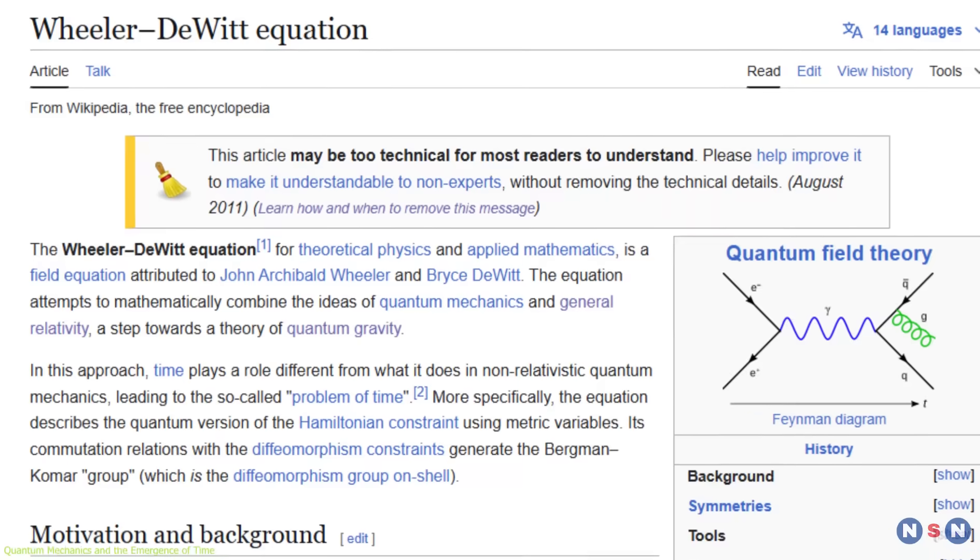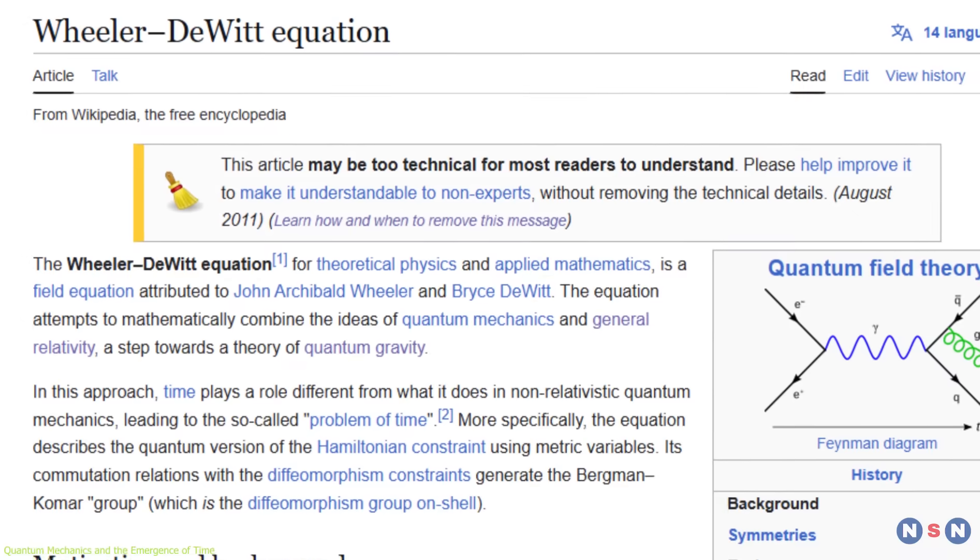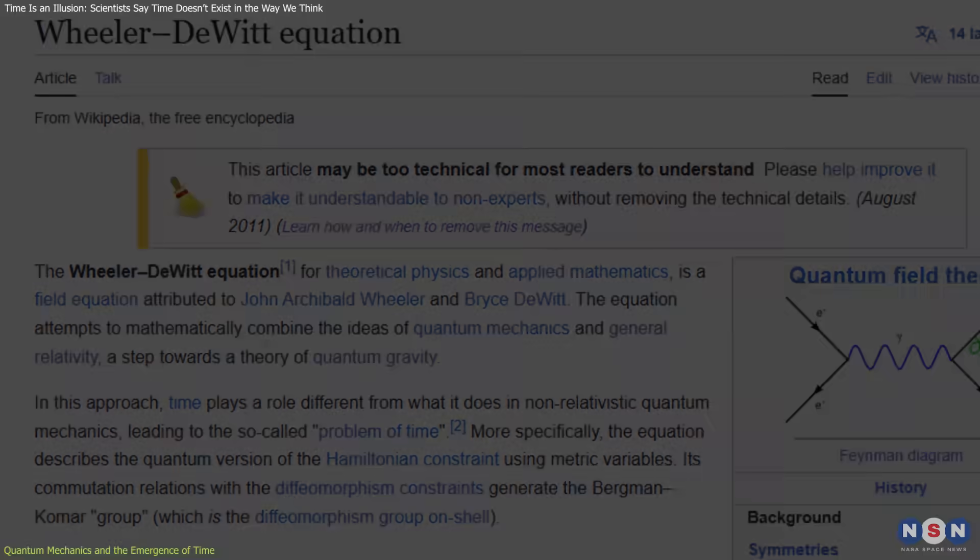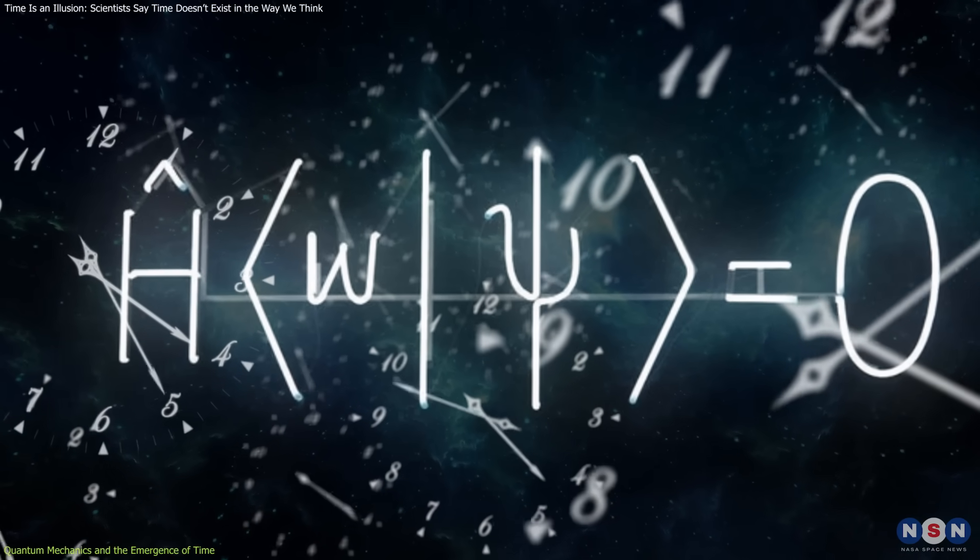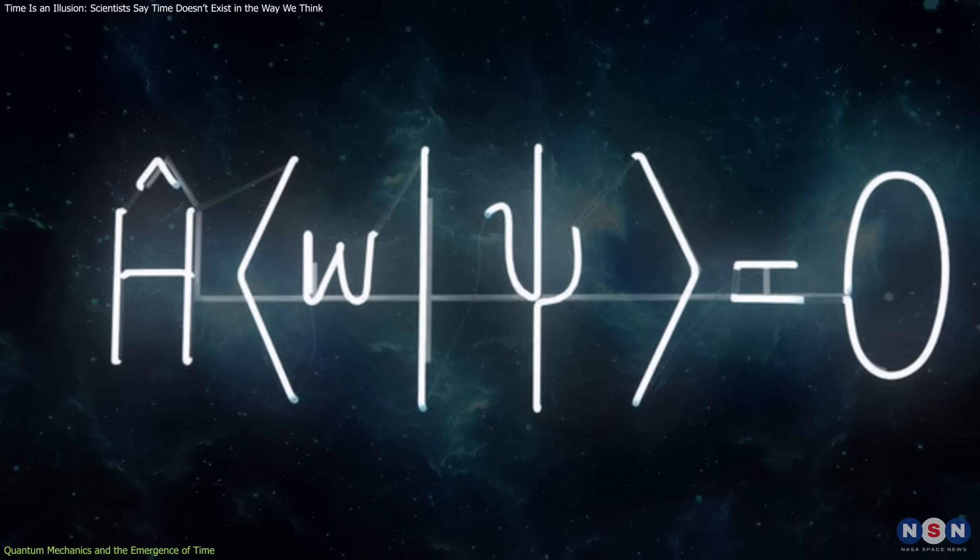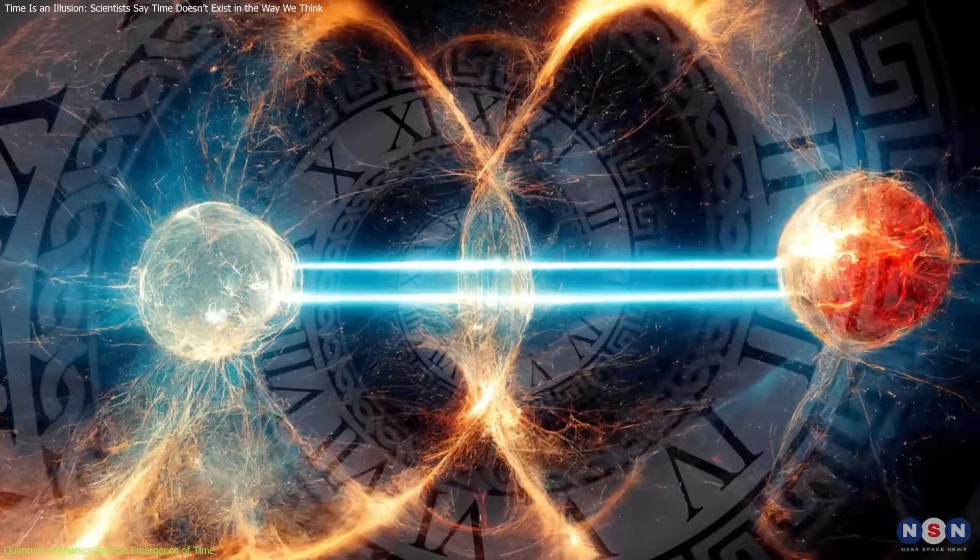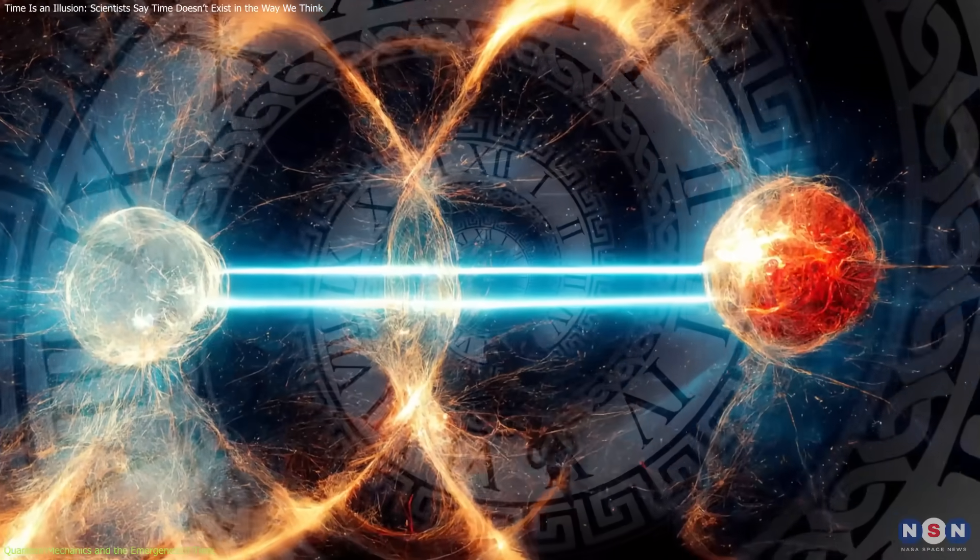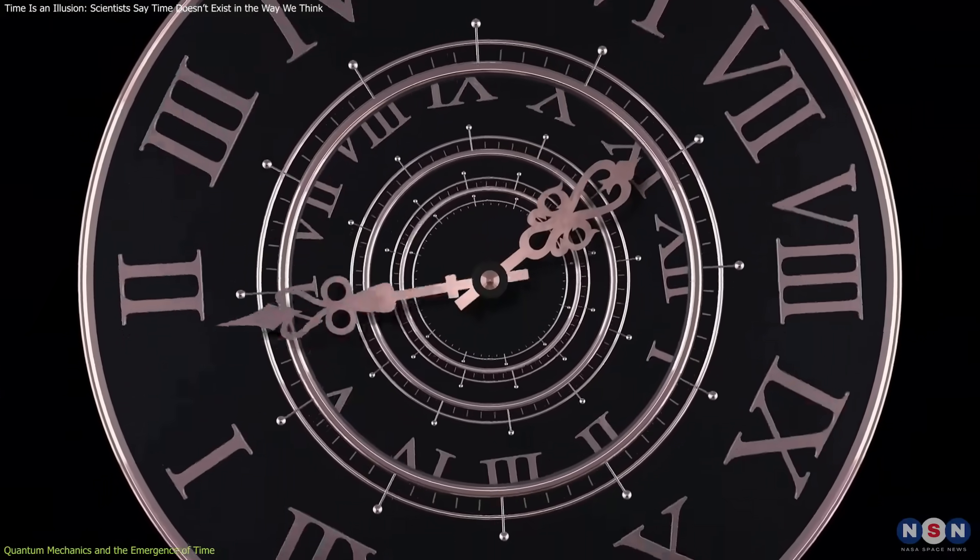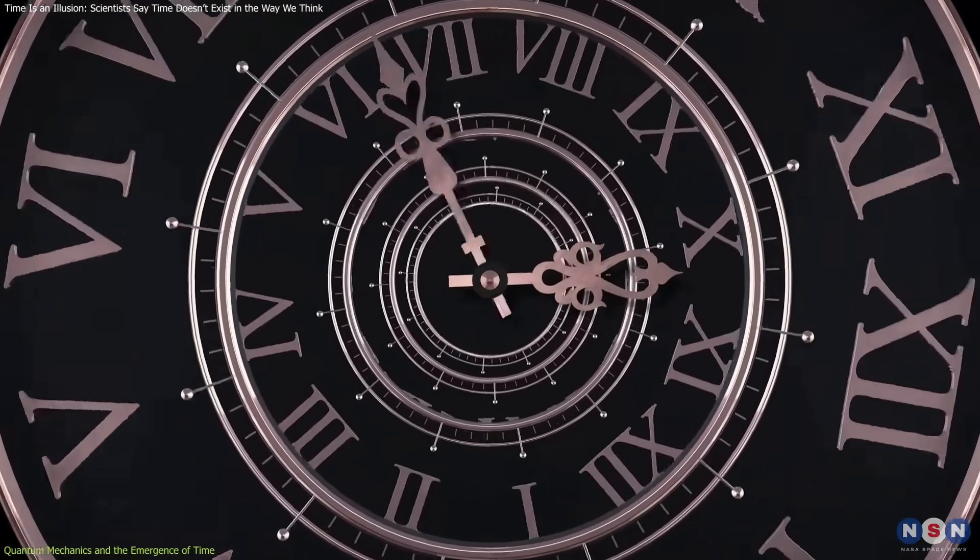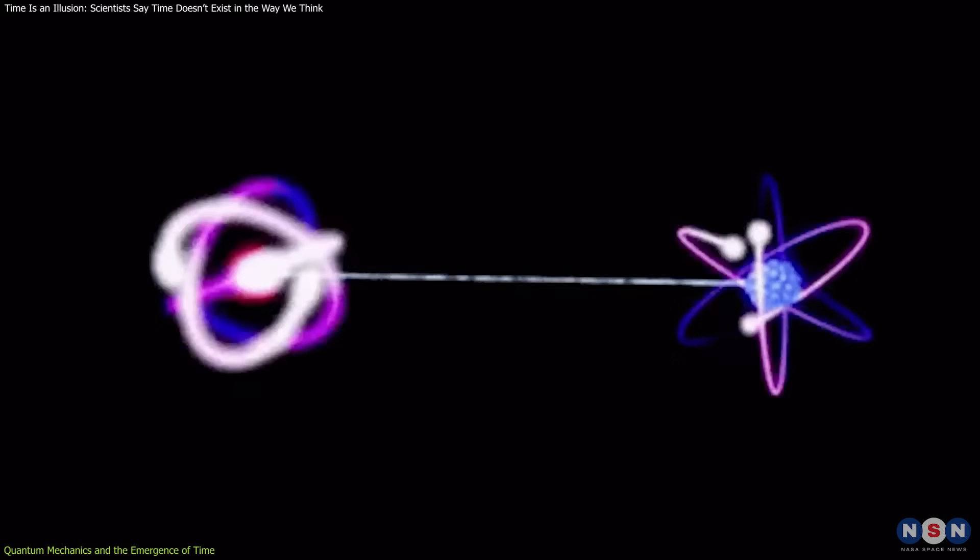This perspective aligns with the Wheeler-DeWitt equation in quantum gravity, which intriguingly omits time altogether. The equation describes the quantum state of the entire universe, suggesting a timeless wave function of the universe. In this view, time emerges only when considering subsystems in relation to each other, reinforcing the idea that time is not a fundamental backdrop, but an emergent property arising from the entanglement and interactions of quantum states.